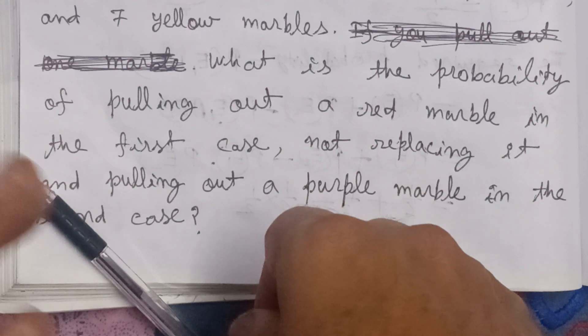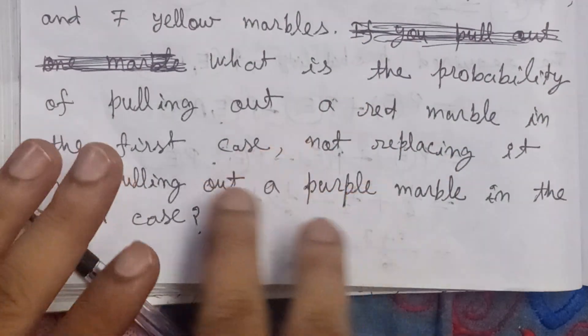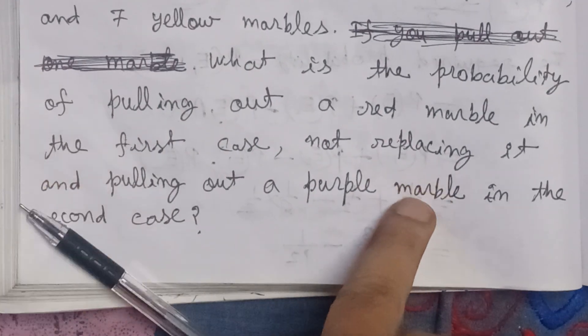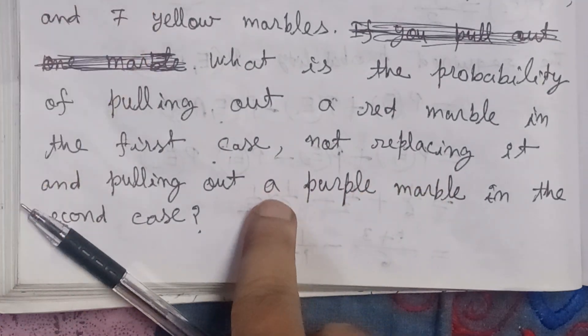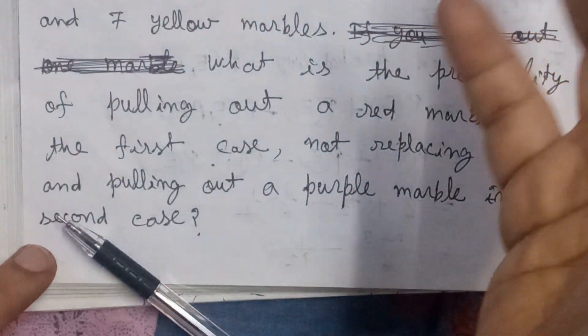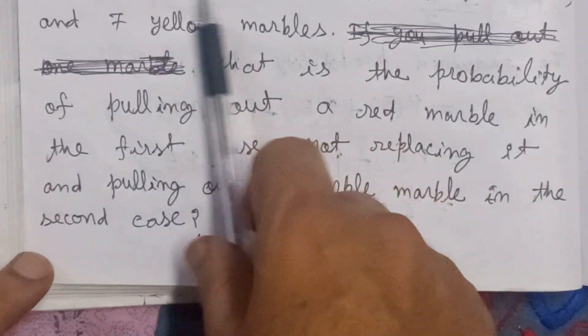and the first one was not put back. We need to find the probability that the first is red and the second is purple, with the condition that the red marble drawn first was not placed back in the bag.